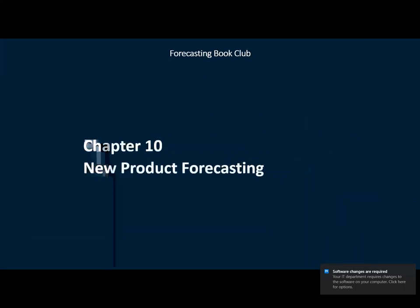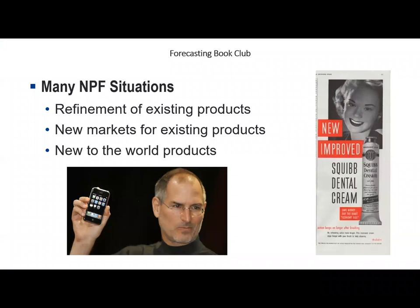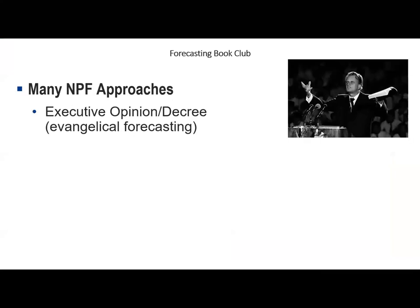Paul's chapter on new product forecasting references a book by Ken Khan from 2006 called 'New Product Forecasting: An Applied Approach.' Khan identifies several kinds of new product forecasting situations: refinements of existing products such as a laptop with faster processor or improved toothpaste, new markets for existing products such as expanding a regional brand globally, and new-to-the-world products like the first smartphone. What's common to all these situations is that there is little or no sales history data for extrapolation.